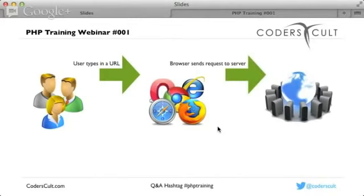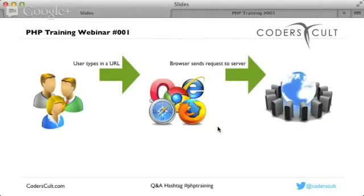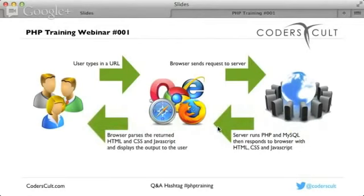After receiving the request, the server runs different things to return the proper response to the browser. Part of what the server does is run PHP and MySQL — to do computation, processing, and data handling. PHP then responds to the browser with HTML, CSS, and JavaScript. PHP runs on the server, MySQL runs on the server, and they generate the HTML, CSS, and JavaScript which are sent back to the browser. The browser then parses the returned HTML, CSS, and JavaScript and displays the proper output to the user.